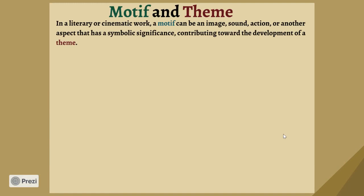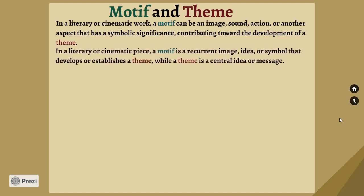Another aspect, especially for film but also for literature, is thinking about motif. Motifs are not themes. If you're musically inclined, you might get confused because a motif musically is a theme — but in literary and cinematic contexts, motifs are not themes. They are repeating patterns. They could be a form of image, sound, action, or any other aspect that is repetitive and has some symbolic significance, contributing toward the development of a theme. A motif is a recurrent image, idea, or symbol that develops and establishes the theme, while the theme is the central idea or message.